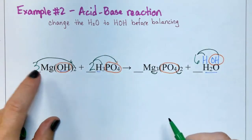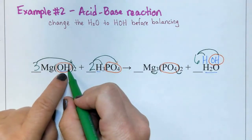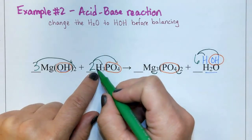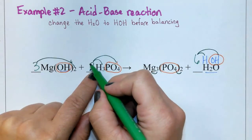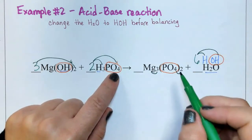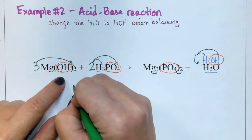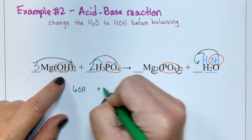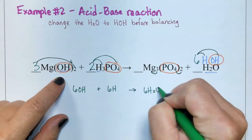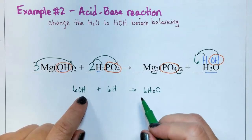Final check: three magnesium, three magnesium. Three times two is six hydroxide, six hydroxide. Two times three is six hydrogen, six hydrogen. And two times one is two phosphates, two phosphates. Also note that in this reaction, we have six hydroxides plus six hydrogens, and they yield six waters. That's going to always be the case in various acid-base reactions.